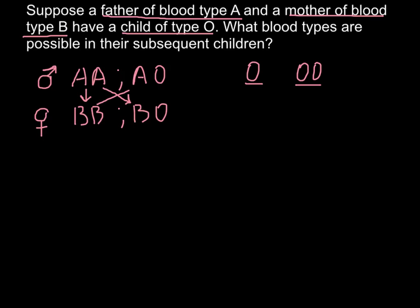And the same would be if we cross mother, that is BB, with father who is AO. Once again, we miss one allele O.